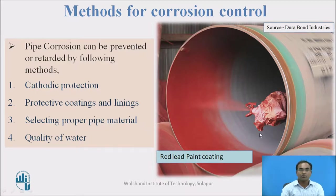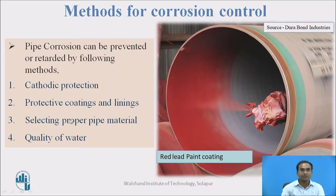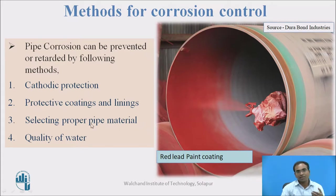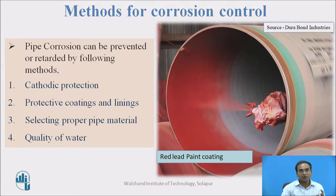There are totally four types of corrosion control methods. The first one is cathodic protection, where we convert the metal pipe into the cathode. The second one is protective coatings and linings — we protect the interior pipe perimeter by giving out coating or lining into it. The third one is selecting proper pipe material: if we don't want to put a lot of money for coating and linings, we can change the material so that the pipe material will not rust very much at a faster rate. The last one is the quality of water — how we can treat the water so that the corrosion rate can decrease.